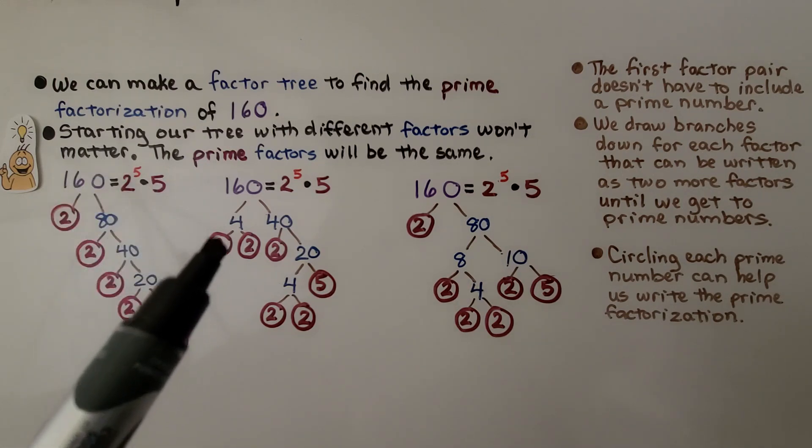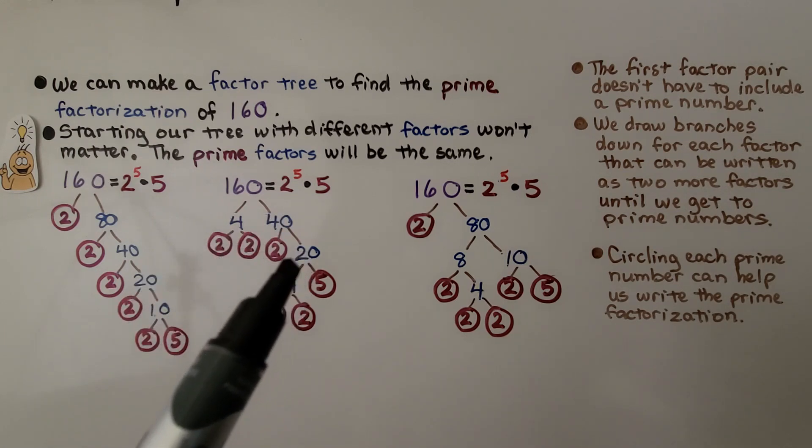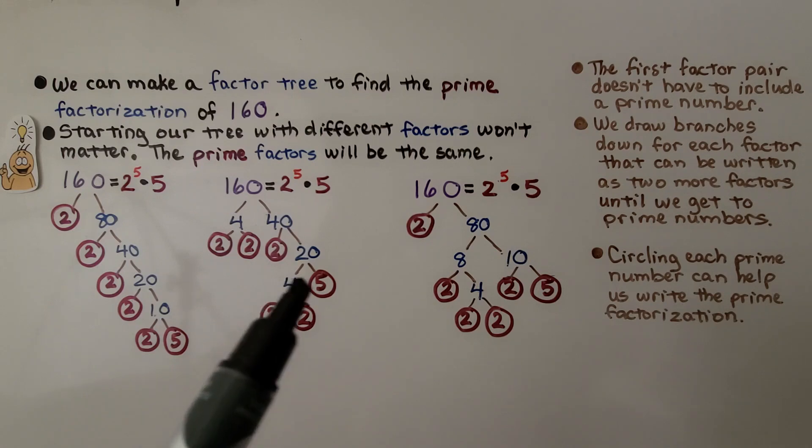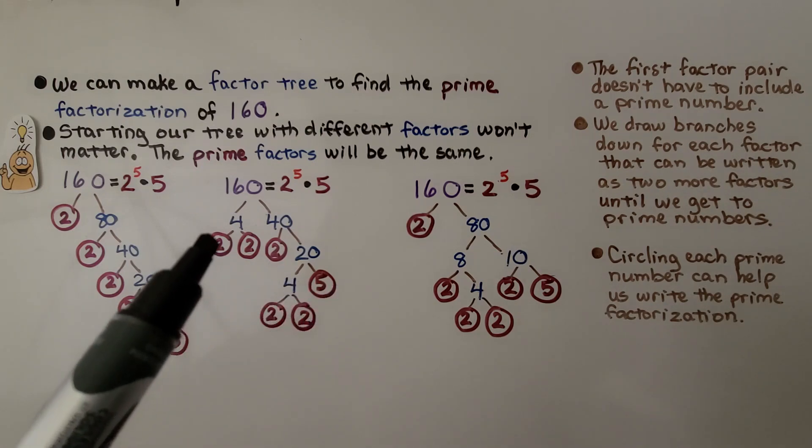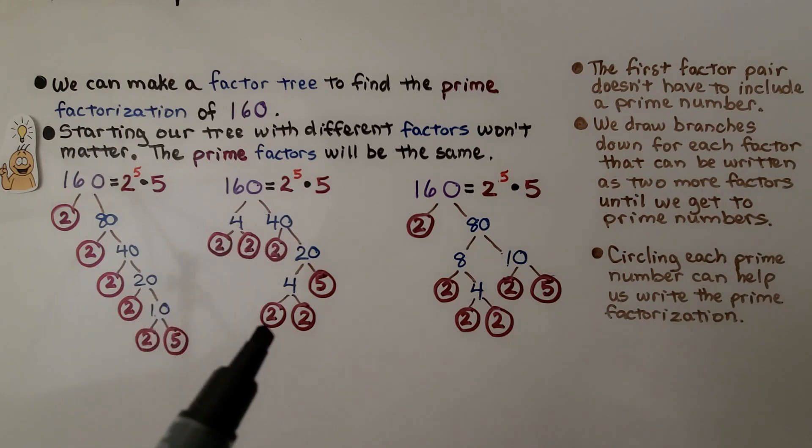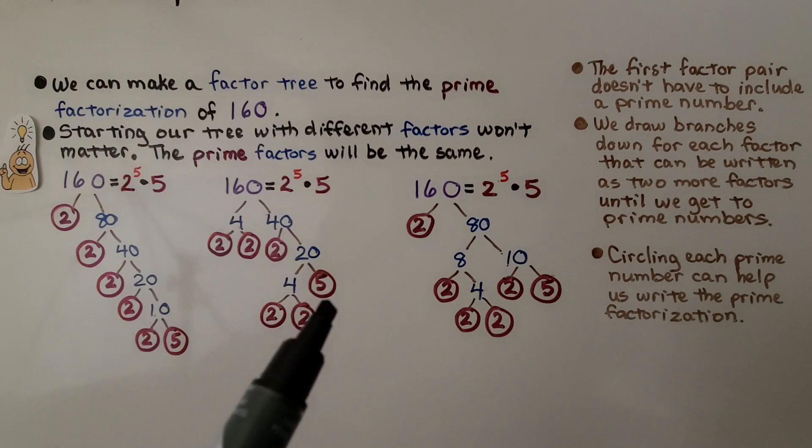When we did it this way, we had to split the 4 into a 2 times 2, the 40 into a 2 times 20. We split the 20 into a 4 times 5, and the 4 into a 2 times 2. And again, we have 1, 2, 3, 4, 5 2's. So we have 2 raised to the fifth power, and a 5.